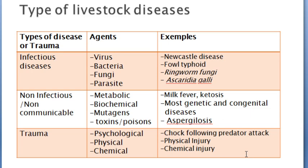Three major types of diseases occur. Firstly, we have infectious diseases — those caused by infectious agents including viruses, bacteria, fungi and parasites.